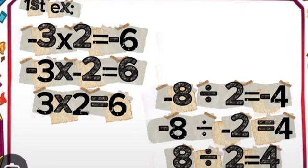For the division, negative 8 divided by positive 2, the answer will be negative 4 because the signs of the numbers are different.